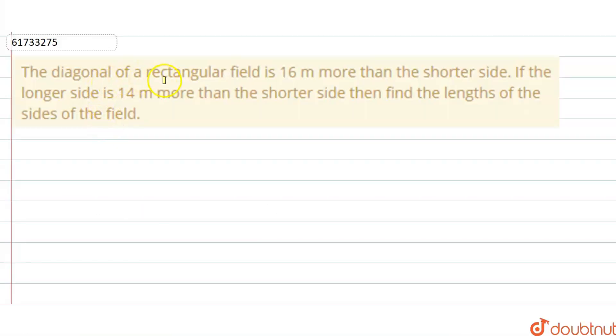Hello everyone! Question is, the diagonal of a rectangular field is 16 meters more than the shorter side. If the longer side is 14 meters more than the shorter side, then find the length of the sides of the field.